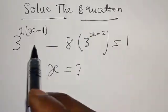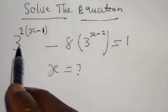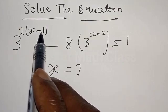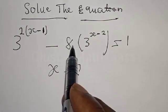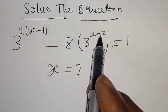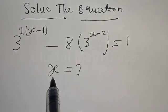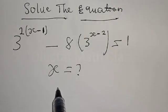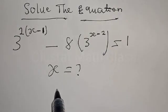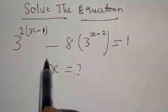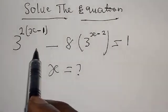Solve the equation: 3 raised to the power 2 into x minus 1, minus 8 into 3 raised to the power x minus 2, equal to 1. Then what is the value of x? Hi everyone, welcome to my class. In this class we want to look at how we can find the value of x from this given exponential equation.